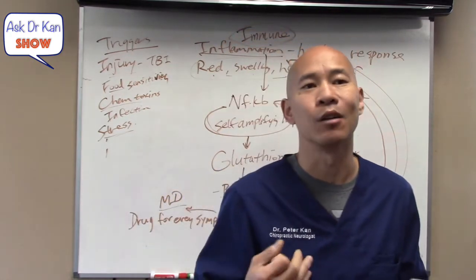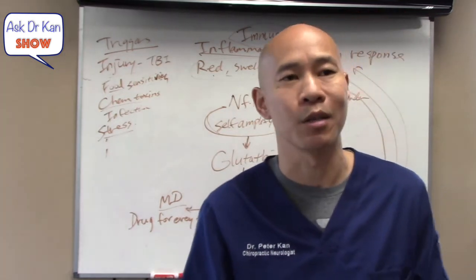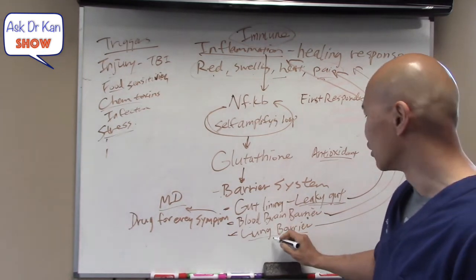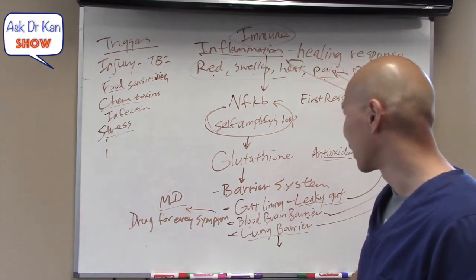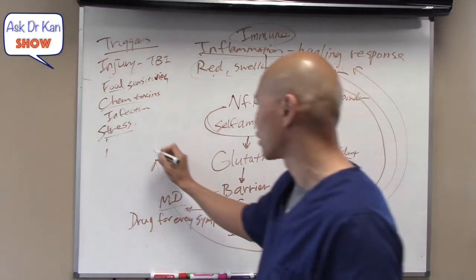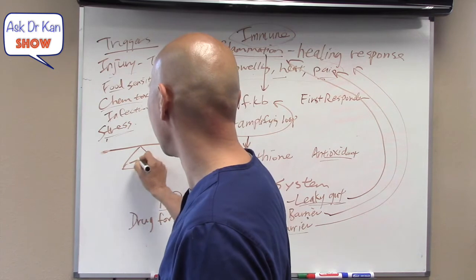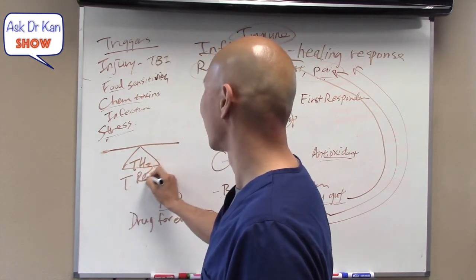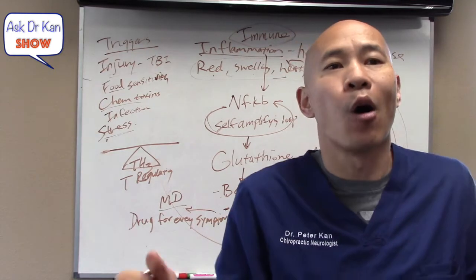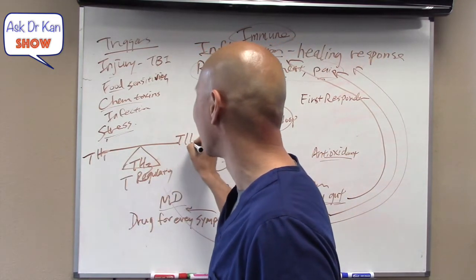Please share this video so more people can hear this message. As the barrier systems start to break down, you're going to start to get what's called TH1-TH2 imbalance. We have TH3 — these are your T regulatory cells. T regulatory cells are the immune cells that regulate how hard your immune system attacks something and which branch of the immune system to use. There are two major branches: the TH1 system, which are your killer cells — they actually go and kill the bad guys — and the TH2 system, which is your antibody system.